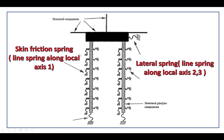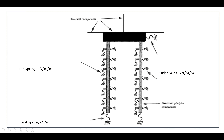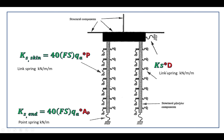For skin friction along the pile, we draw a spring along L6-1 and L6-2, and a bearing spring at the end of the pile. For the skin friction we can apply a line spring — the unit is kN per meter per meter. For the lateral spring you can also apply either a line spring or a node spring.